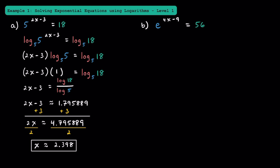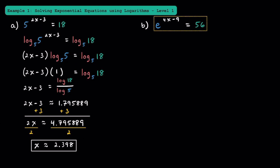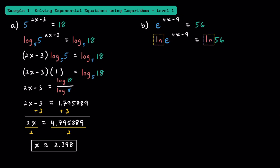If you want to, take this value of about 2.4 and plug it in for x to see if you do get about 18. Now let's try solving this equation where we have e to the 4x minus 9 power is equal to 56. To solve for x, we're going to have to get this 4x minus 9 down from the exponent. To do that, we're going to take the natural logarithm, or ln, of both sides, specifically because the base of ln is e.